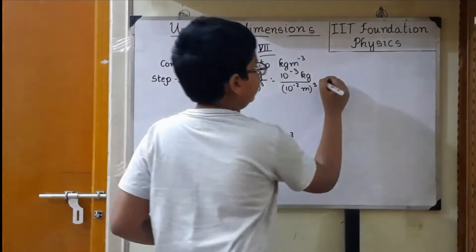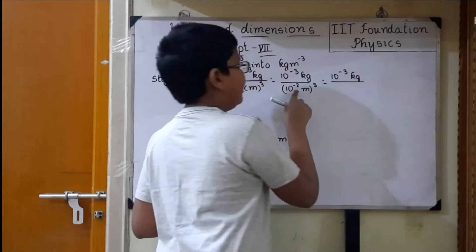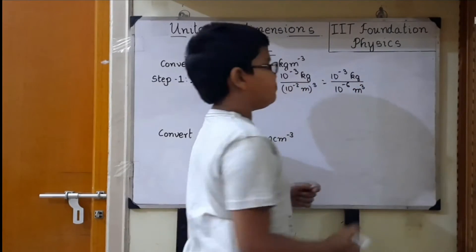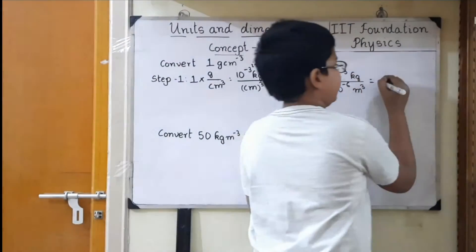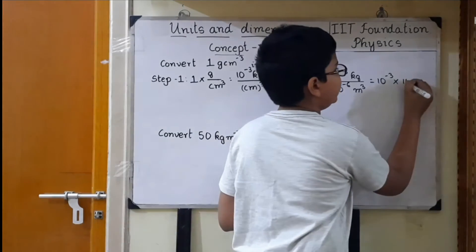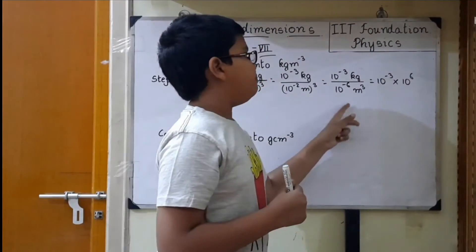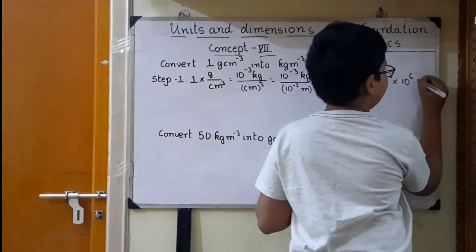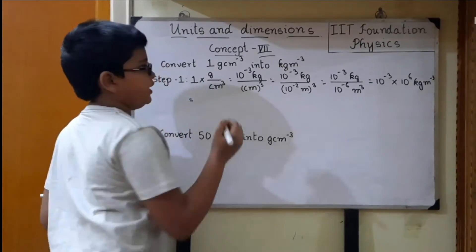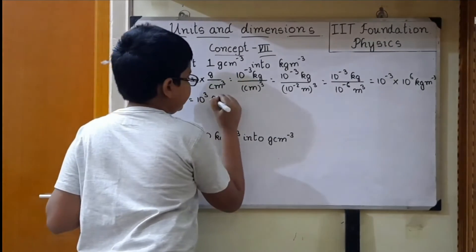So next, it can be written as 10 power minus 3 kg divided by 10 power minus 2 into 3, which is 10 power minus 6 meter cube. So it becomes 10 power minus 3 divided by 10 power minus 6. Bringing meter cube to the numerator gives 10 power 6, so it becomes 10 power minus 3 into 10 power 6, which is 10 power 3 kg per meter cube.